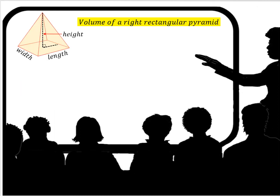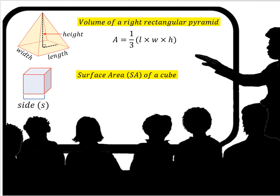The volume of a right rectangular pyramid: the formula is one-third times length times width times height. The height is a line drawn vertically from the center top all the way to the bottom.